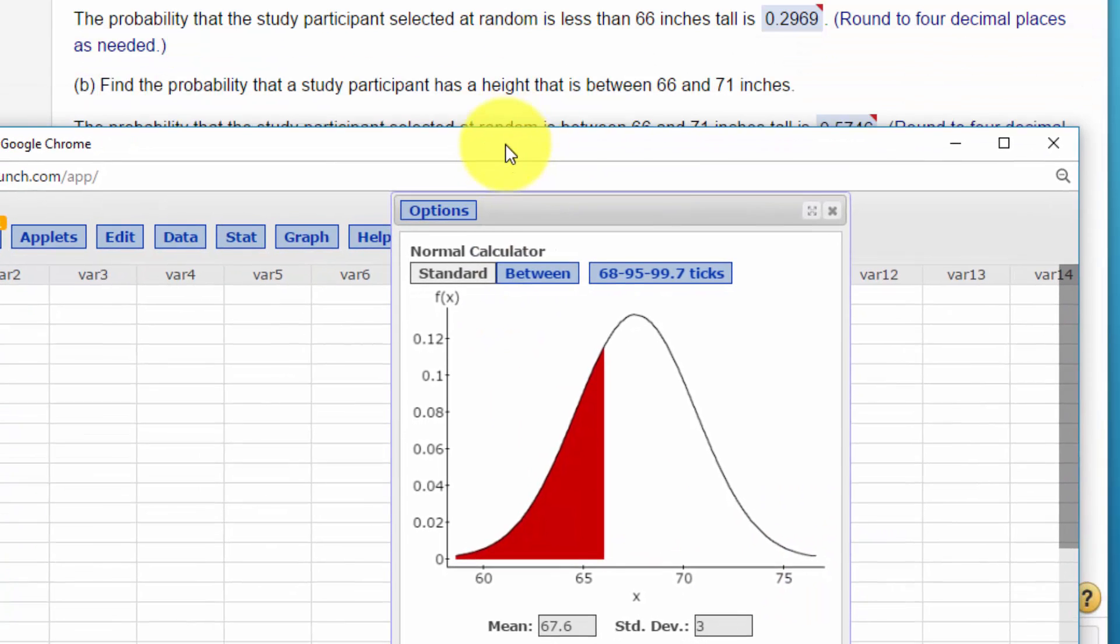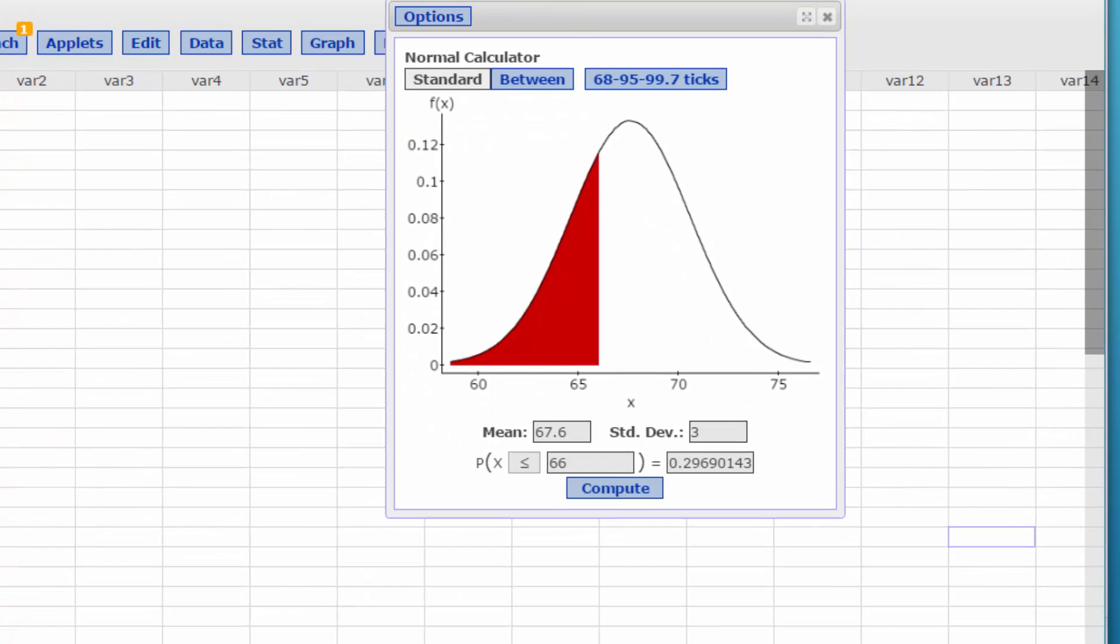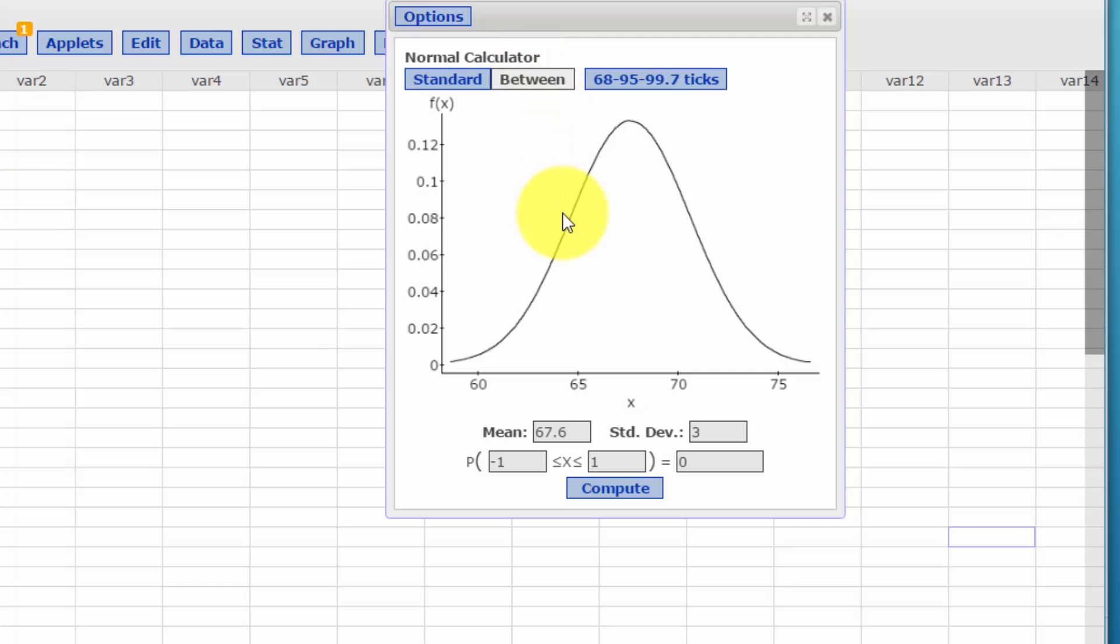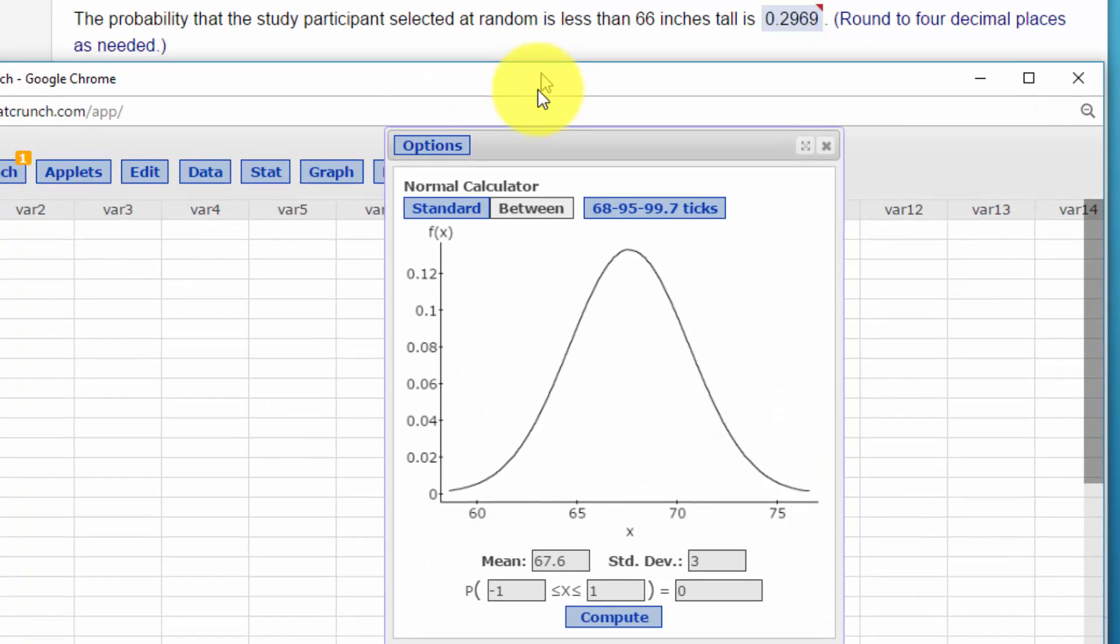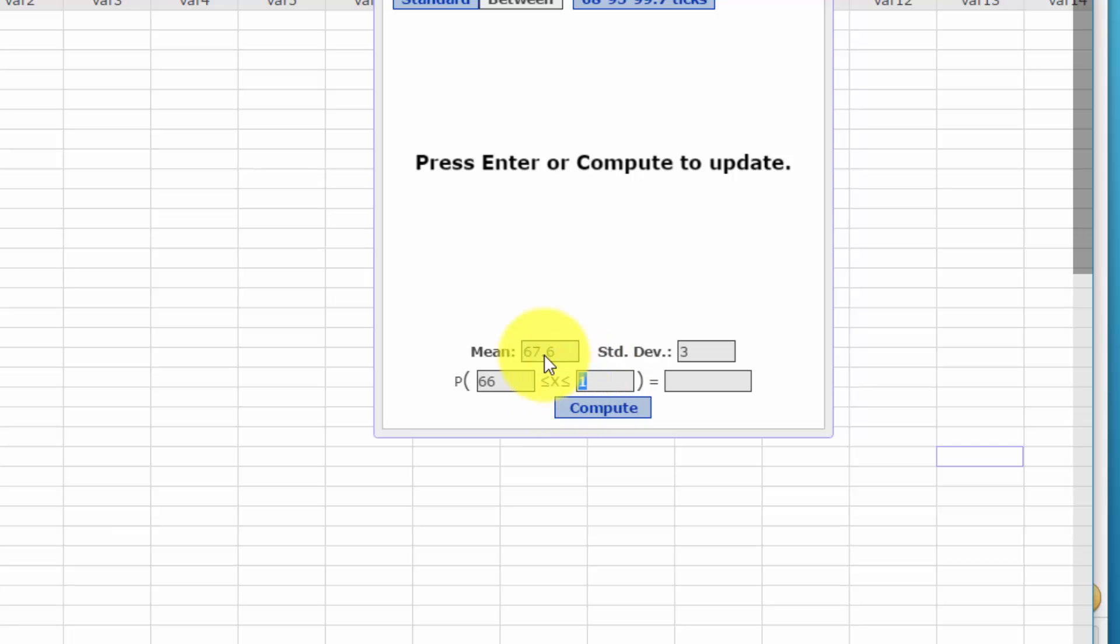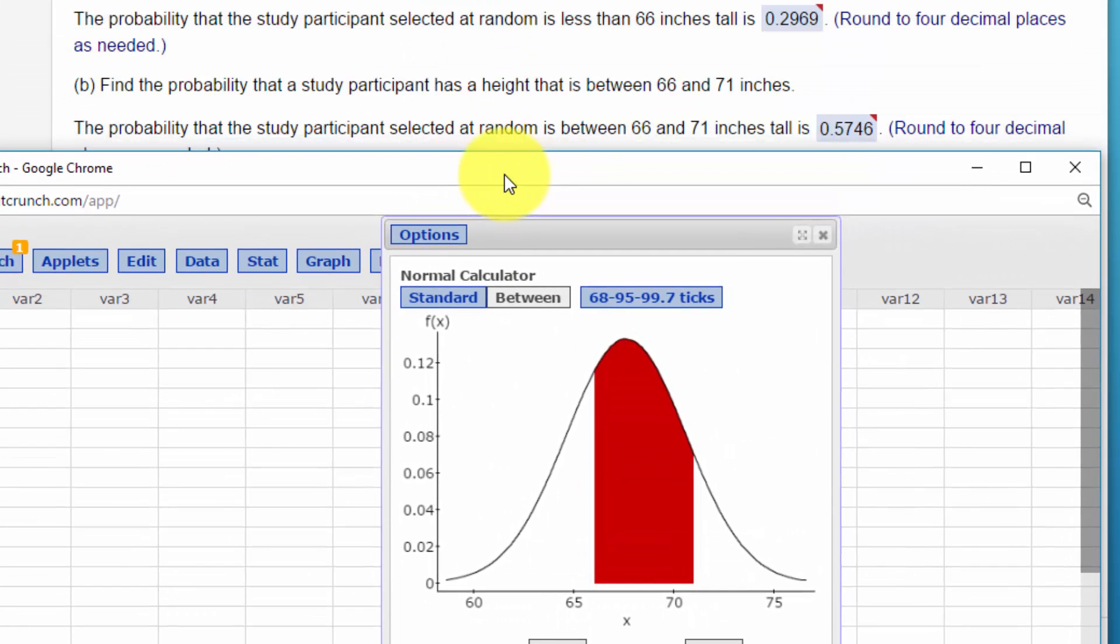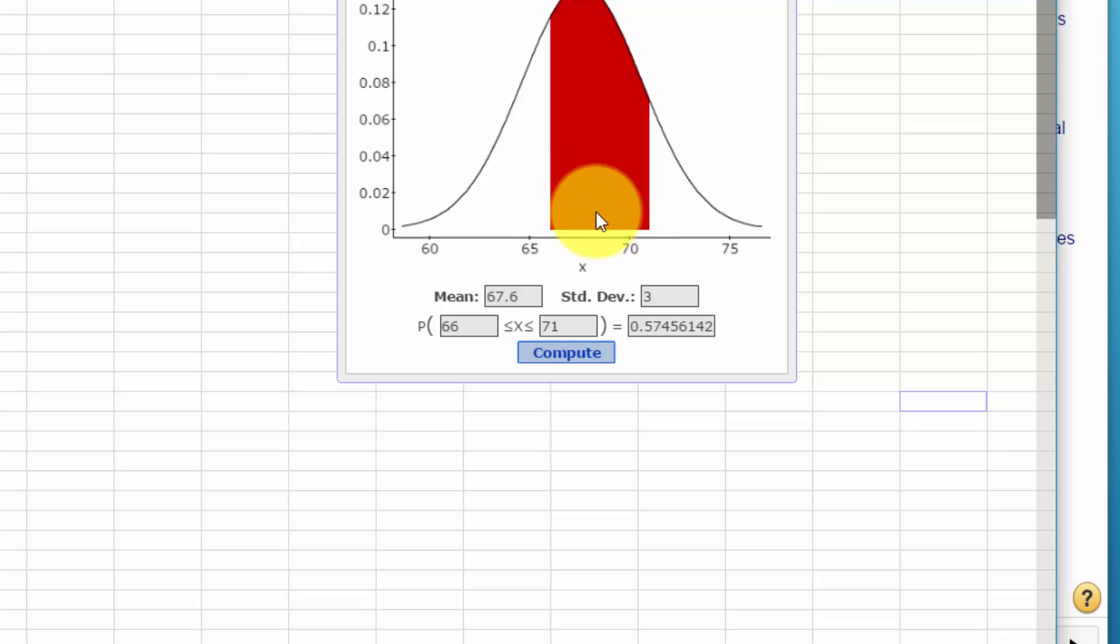Let's go down to the next question. Find the probability that a participant has a height between 66 and 71. And again, our calculator will knock that out pretty quickly. We're going to click on the between option, and we leave our mean and standard deviation just as it is. And we want between 66 and 71. Click Compute, and we get an area under the curve there of 0.5746. That's the answer. That's the probability that someone would be between those two heights.